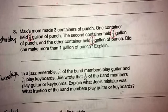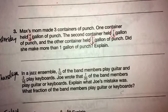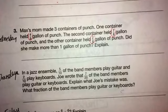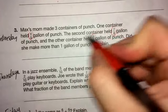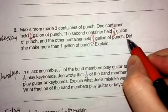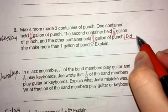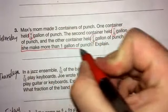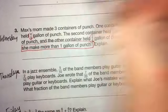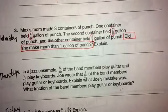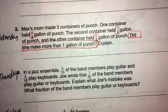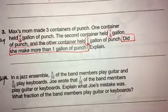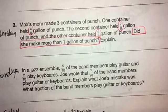So I've already started my CUBES by circling my numbers. Next I need to underline important words. So our question is, did she make more than 1 gallon of punch? And that's really the most important thing that we have here. Because there's no keywords that tell us that we need to add. We just need to understand that to find out if she made more than 1 gallon, we do have to add up these fractions.